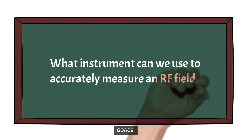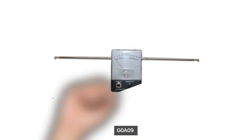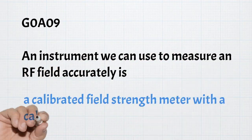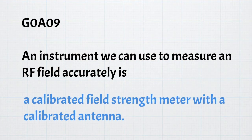For safety, we should ask what instrument we can use to accurately measure an RF field. What we would use is a calibrated field strength meter coupled with a calibrated antenna. For the exam, we need to know that an instrument we can use to measure an RF field accurately is a calibrated field strength meter with a calibrated antenna.